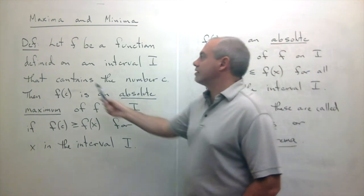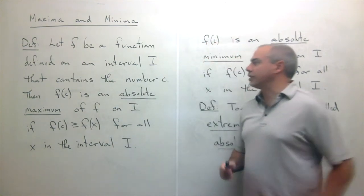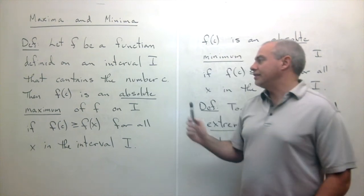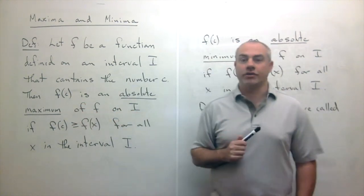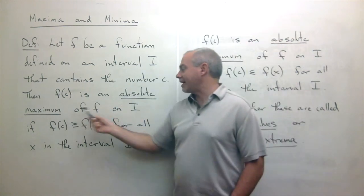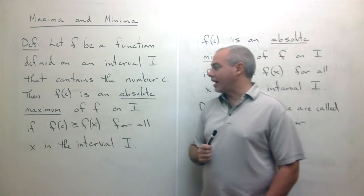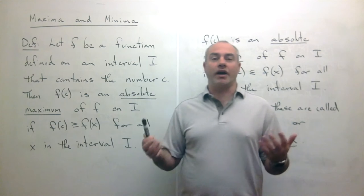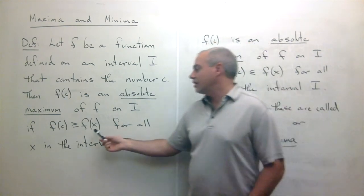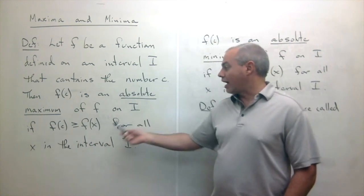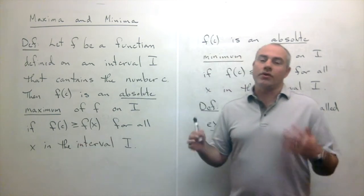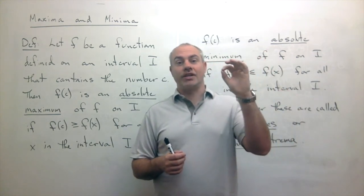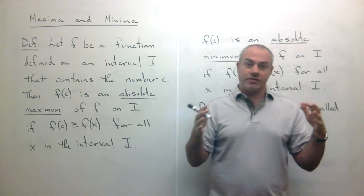The definition says: let f be a function defined on an interval I that contains the number c. We call f(c) an absolute maximum of f on I if the functional value at c is greater than or equal to all the other functional values in that interval I. In other words, at c the function is bigger than everybody else.